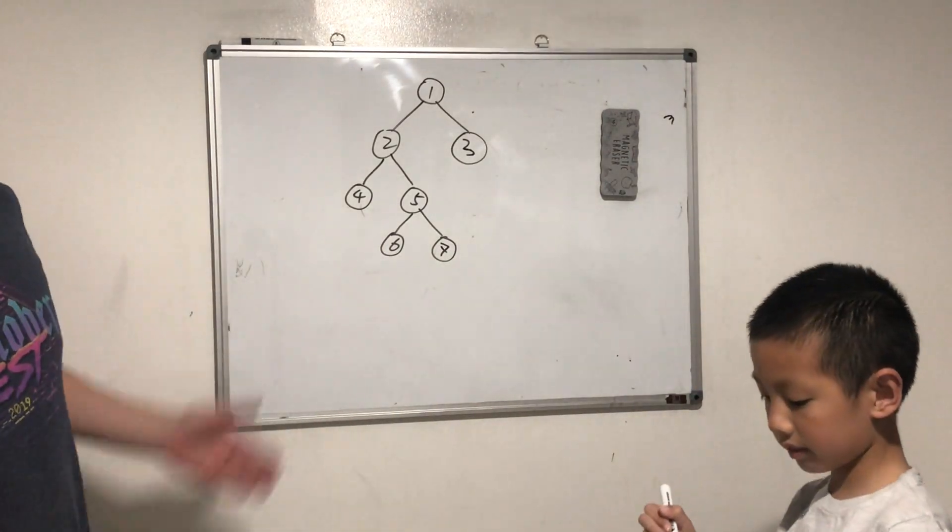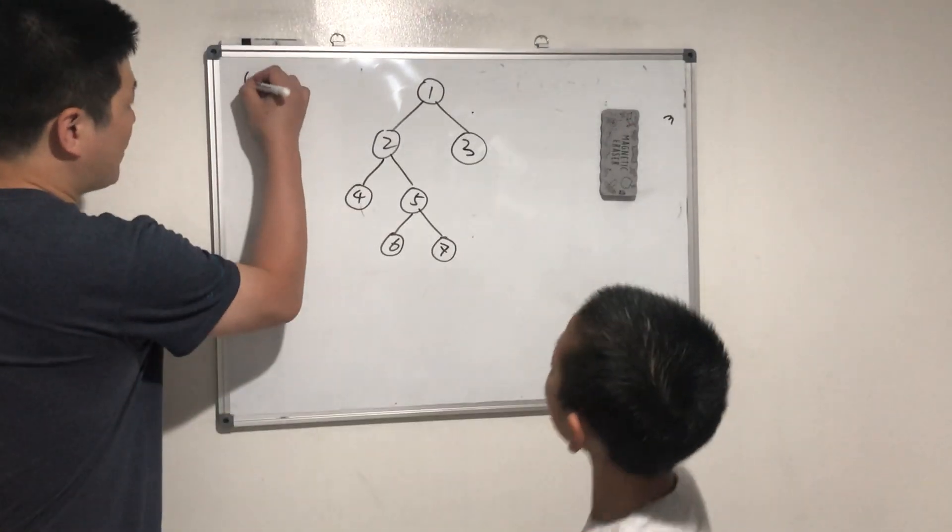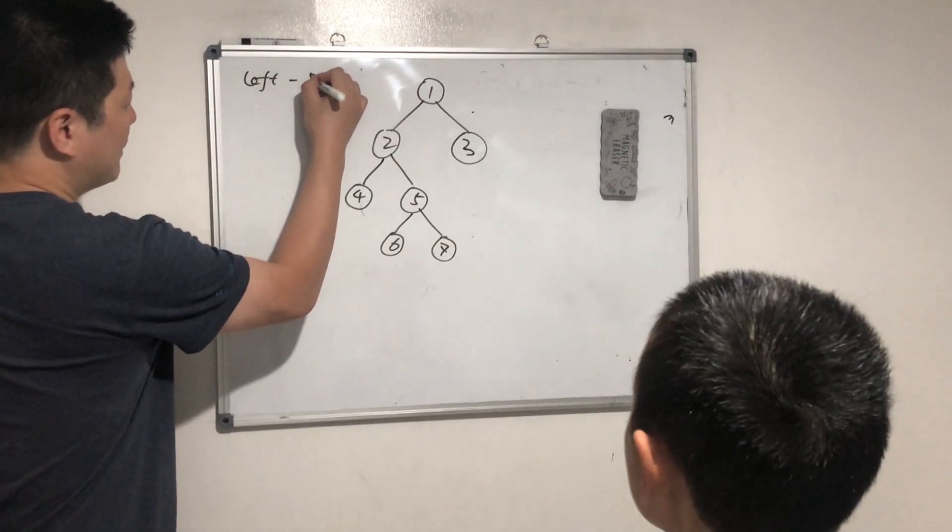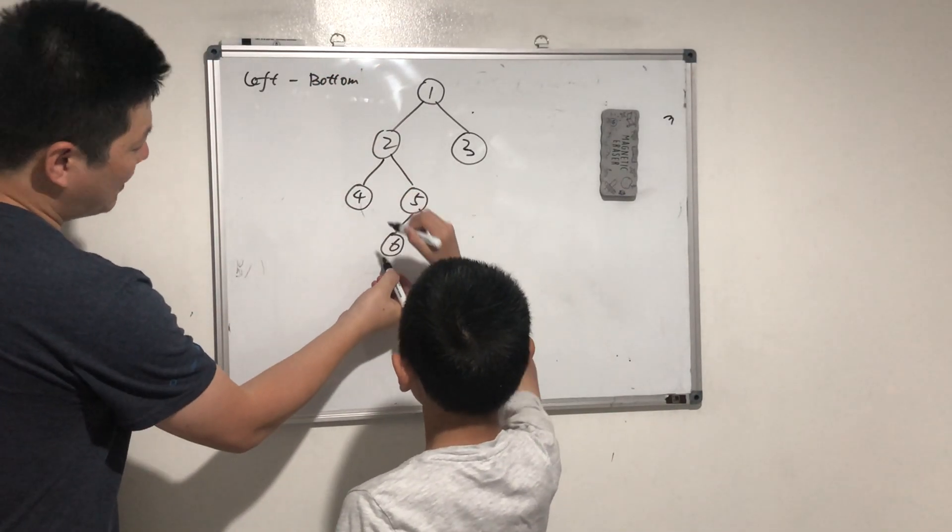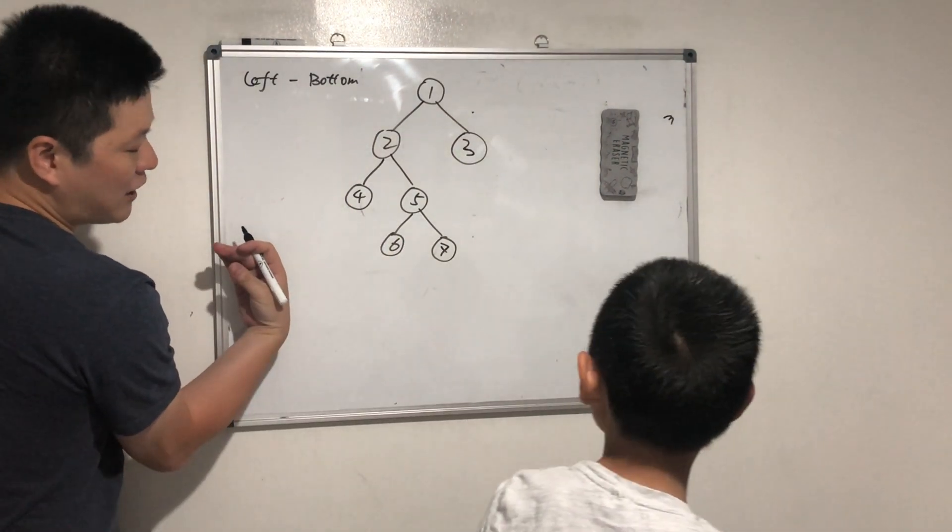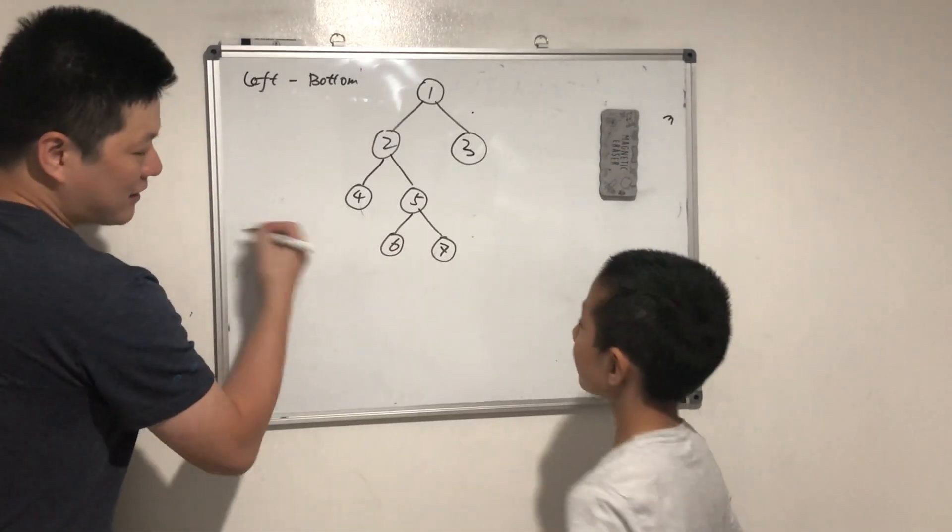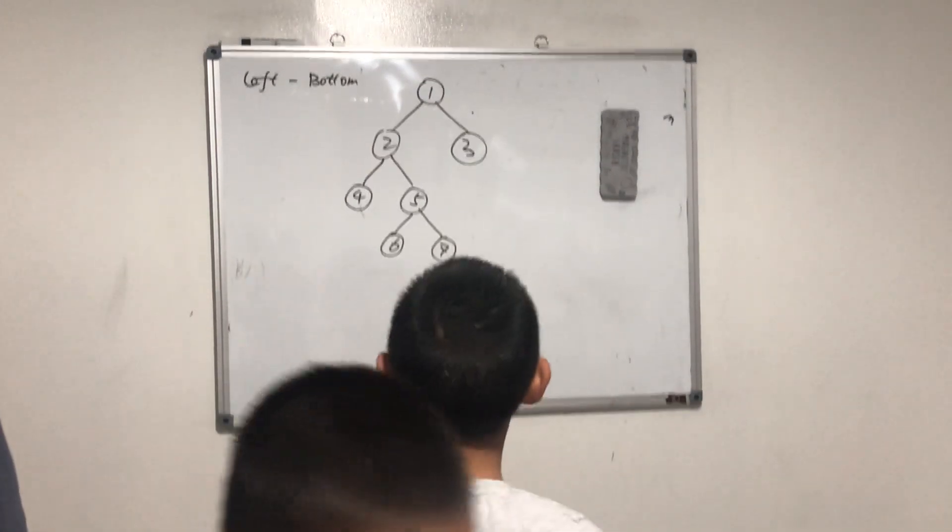Okay, so given the binary tree, we want to find out the leftmost, left bottom corner, bottom leaf. Okay, so which is this one, the last row. So basically it's the leftmost node of the last leaf, last steps. Okay? Okay. Any idea?